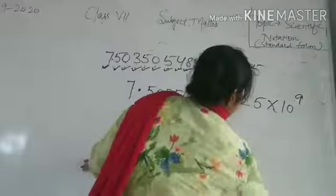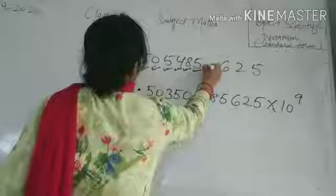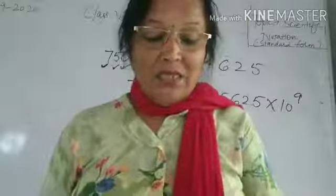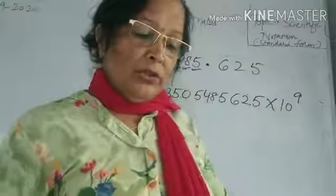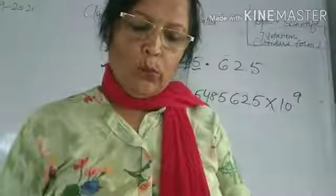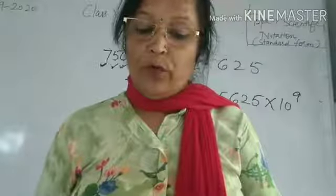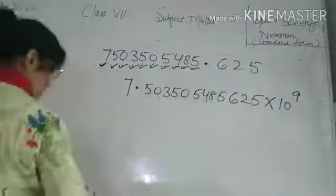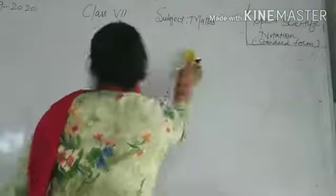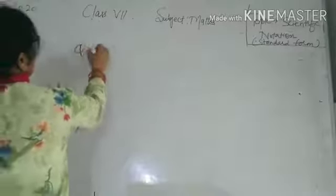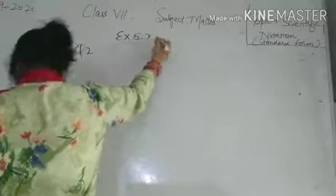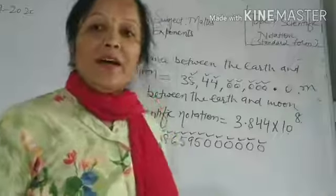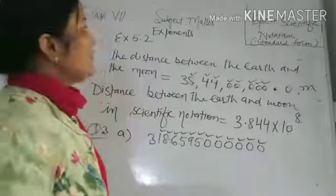One question from Exercise 5.3 or Exercise 5.2, Chapter Exponents: the distance between the earth and the moon is 38 crores, 44 lakh meters — that is 384,400,000 meters. Write the distance in scientific notation.